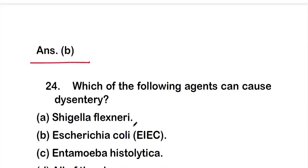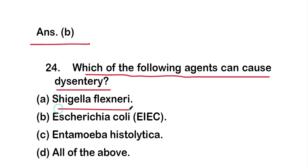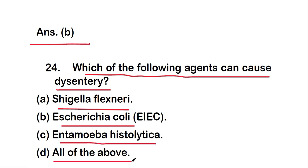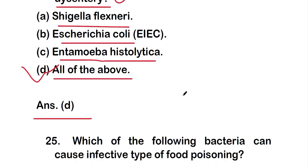Question 24: Which of the following agents can cause dysentery? Option A: Shigella flexneri, option B: Escherichia coli, option C: Entamoeba histolytica, or option D: all of the above. This is an easy question — the right answer is option D, all of the above. Shigella, E. coli, and Entamoeba histolytica are all responsible for dysentery.